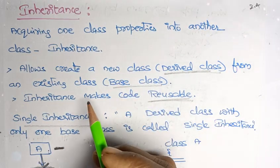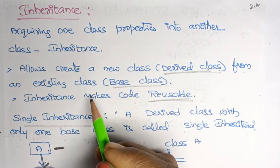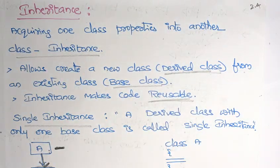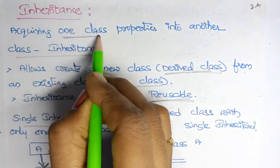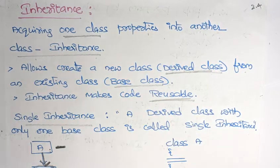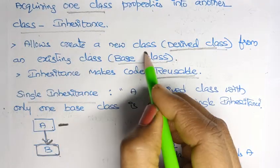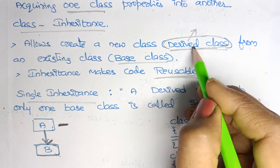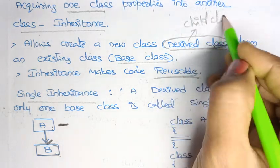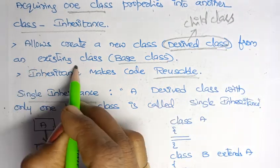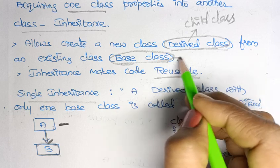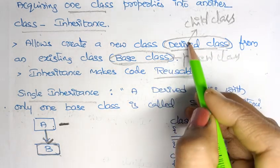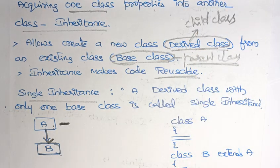Now we will see what is inheritance and types of inheritance with programs. Acquiring one class properties into another class is nothing but inheritance, so that we can get one class properties into another class. Inheritance allows you to create a new class — that new class can be called a derived class, or simply a child class, from an existing base class, which you can remember as a parent class.